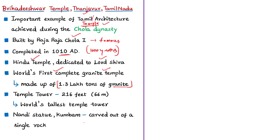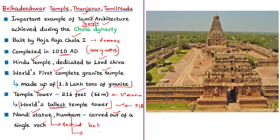The temple tower, called the Vimana, is about 216 feet or 66 meters tall, making it among the tallest of its kind in the world. PIB states this is the world's tallest temple tower. Important statues such as the Nandi statue have been carved out from a single granite rock. The apex bulb-like portion called the Kumbam — also known as Kalasha or Shikharam — was also carved from a single granite rock. The Gopuram, the pyramidal tower over the gateway, is a significant feature of the temple.